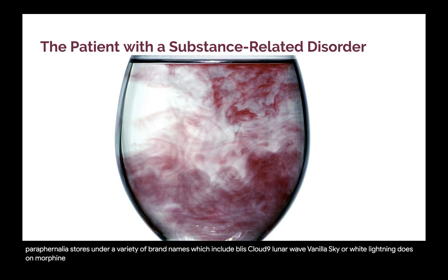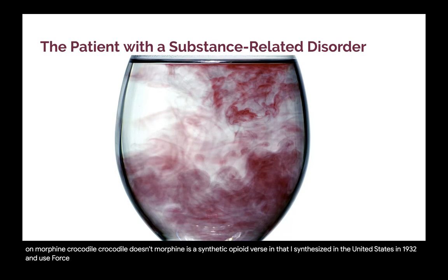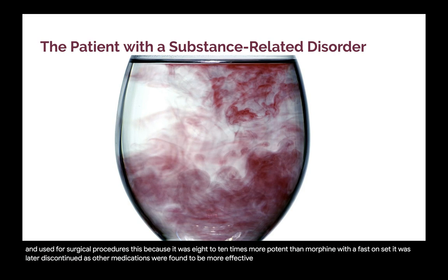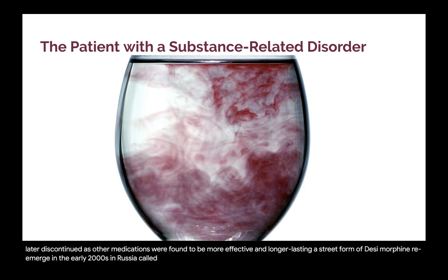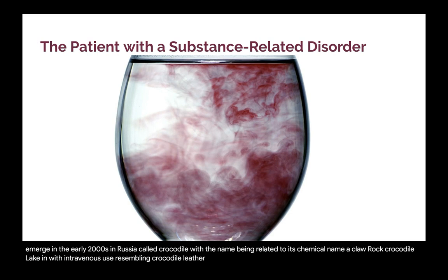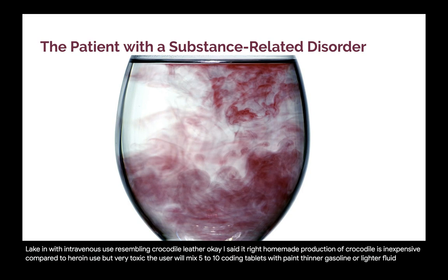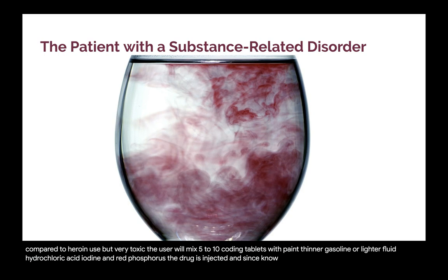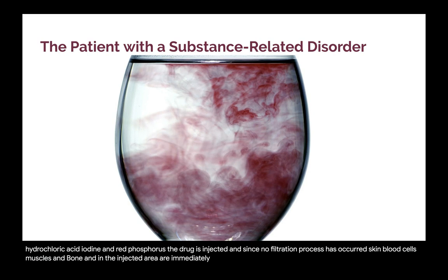Desomorphine (crocodile): desomorphine is a synthetic opioid first synthesized in the United States in 1932 and used for surgical procedures because it was eight to ten times more potent than morphine with a fast onset; it was later discontinued as other medications were found to be more effective and longer lasting. A street form re-emerged in the early 2000s in Russia called crocodile, named for its chemical name (achlorocodide) and for the damage it causes to the skin with intravenous use, resembling crocodile leather. Homemade production of crocodile is inexpensive compared to heroin but very toxic — users mix codeine tablets with paint thinner, gasoline or lighter fluid, hydrochloric acid, iodine, and red phosphorus. The drug is injected, and since no filtration process has occurred, skin, muscles, and bone in the injected area are immediately damaged and eventually necrosis occurs, usually leading to amputation or death.